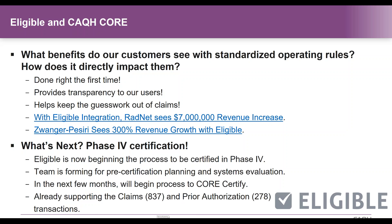What's next? Phase 4 certification. We're beginning the process, which starts with establishing a team. I'll be leading the team to get us started, and we'll always have our technical support to help us through the process. We hope to be certified within the next couple of months and be finished before the end of 2017. As we're already submitting 837s and 278 transactions, it's really important to us that we are always up to date with our certifications. Eligible strives to add new transactions all the time, and as we continue to add these transactions, we will always be looking to CORE to certify for the rest of them.